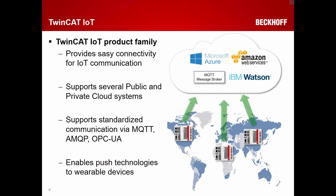TwinCat IoT is a product family that was announced about one and a half years ago at the SPS IPC Drives trade show. It provides easy connectivity for IoT communication, enabling you to use public cloud services like Microsoft Azure, Amazon Web Services, IBM Watson, and many others. You can also use your own private cloud system, and you can send or receive data from any of these cloud services.